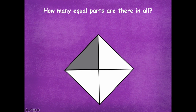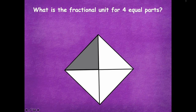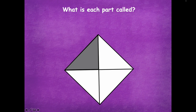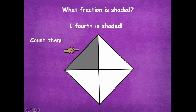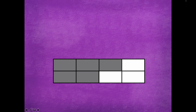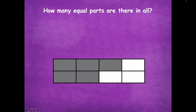Let's look at another one. How many equal parts are there in all? Four. What's the fractional unit for four equal parts? Fourths. What is each part called? One-fourth. What fraction is shaded? One-fourth is shaded.